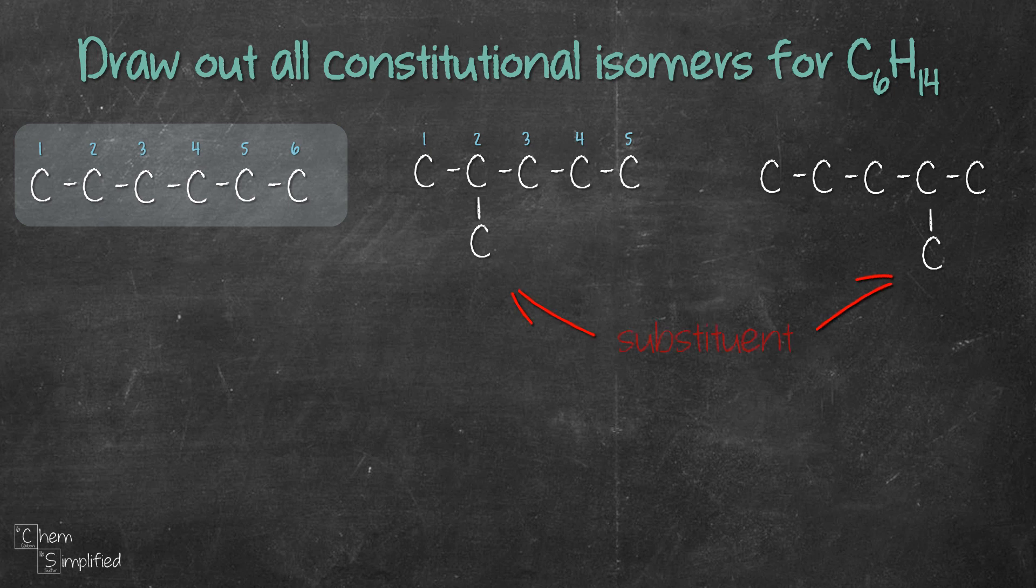Substituent is the stuff hanging, like you see that extra carbon hanging on carbon number 2, that is substituent. So for the furthest right structure, if we were to count, we would have to count from the right hand side. So we would have a substituent on carbon number 2. Looks like these two 5 carbon chain are the same.